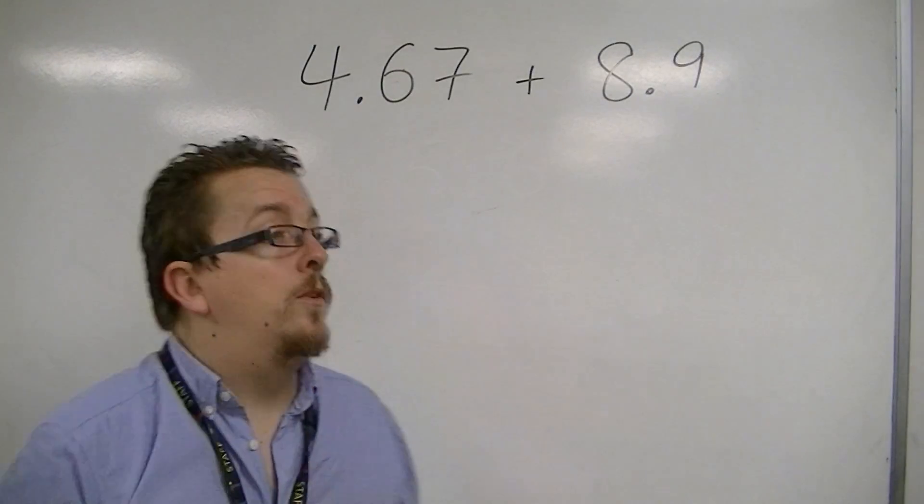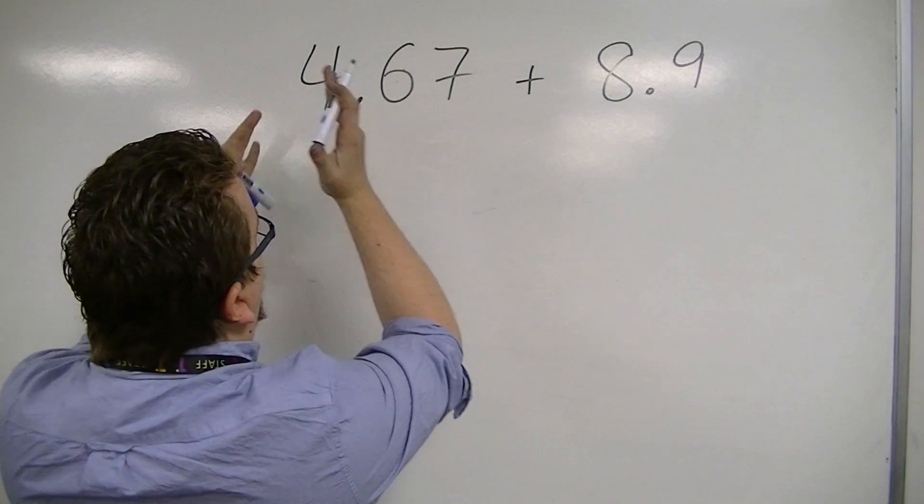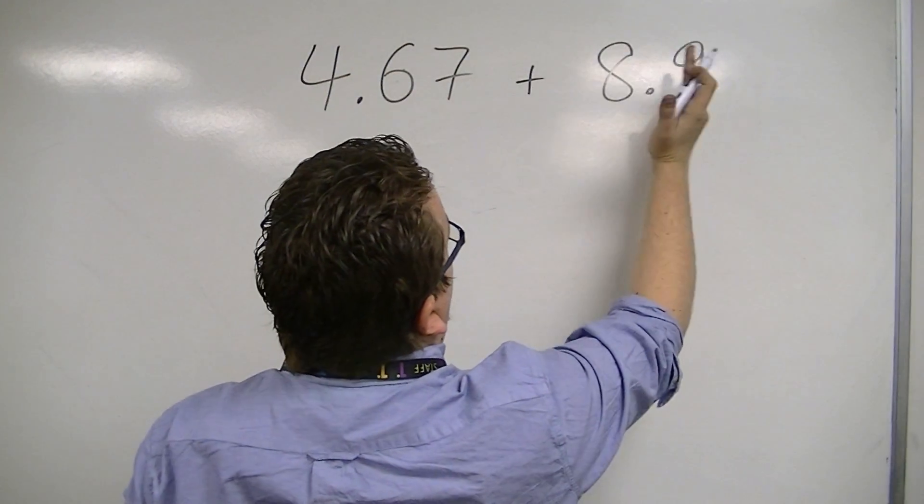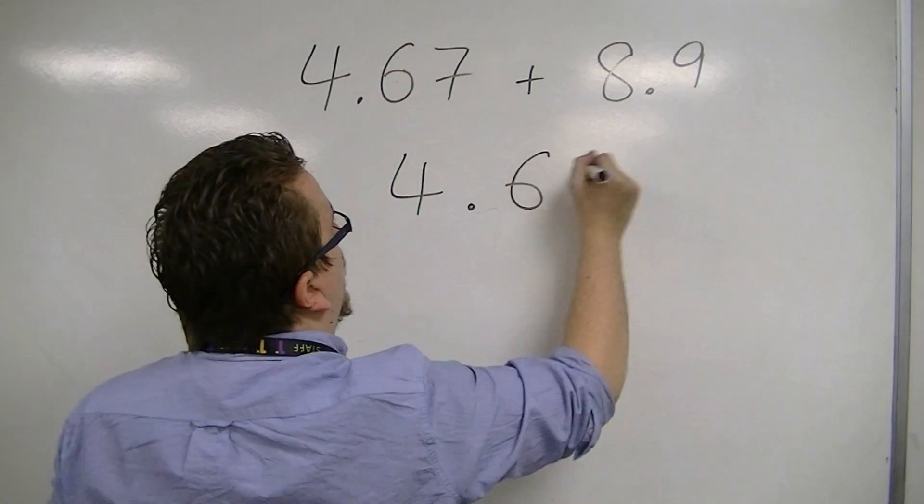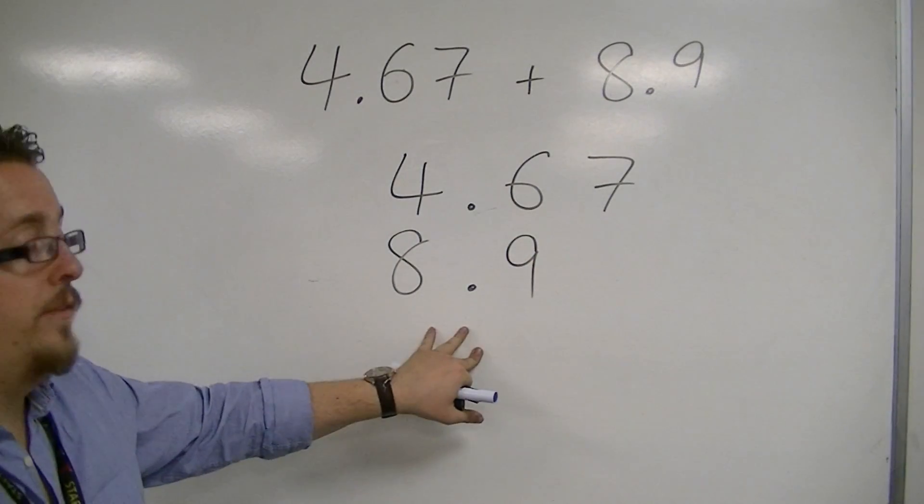So you'll notice now that in doing this, you've got the units, tenths, hundredths. Units, tenths. So they need to line up with those decimal points. And so you'd have to write it down on your page like this.